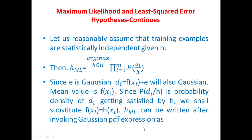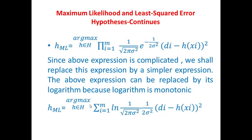Now hml, by invoking the Gaussian expression and substituting f(xi) = h(xi), so the mean changes from f(xi) to h(xi), can be written as: hml = argmax over h in H of the product of (1 / sqrt(2π σ²)) × exp(−(1 / 2σ²) × (di − h(xi))²). Computationally this expression is complicated.